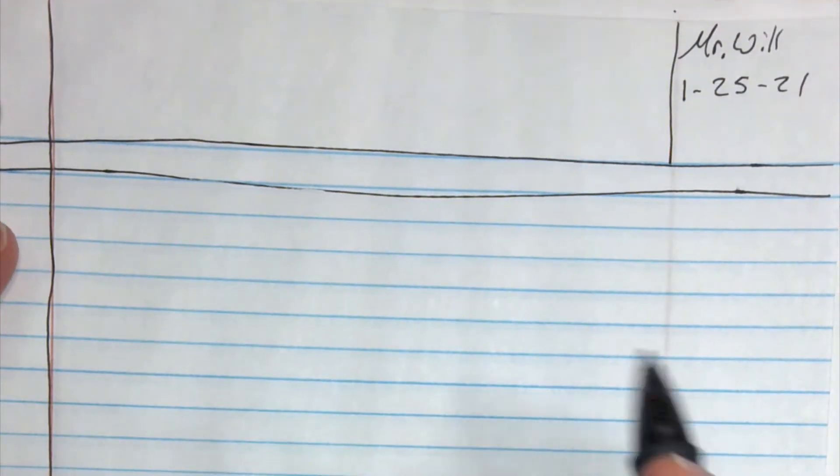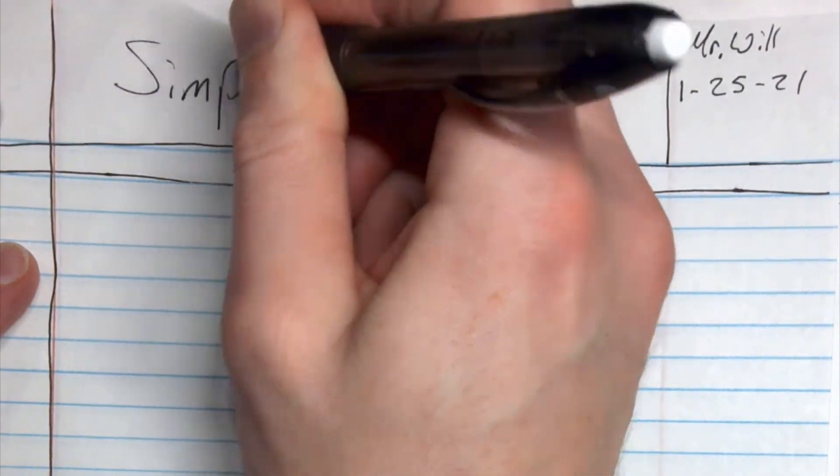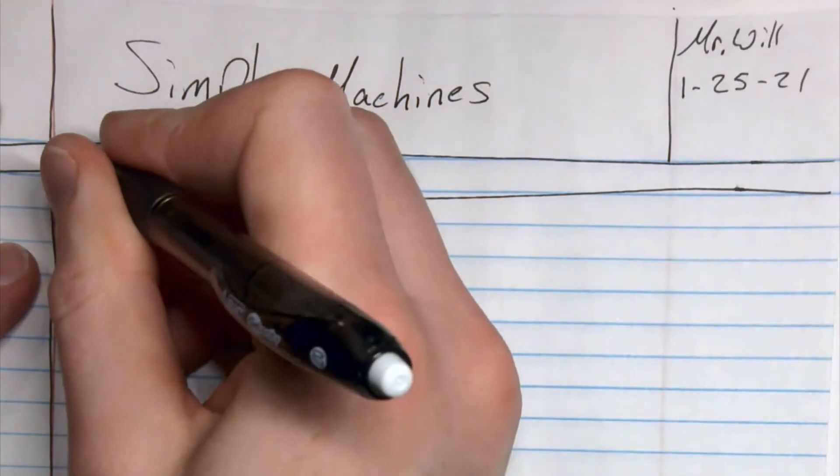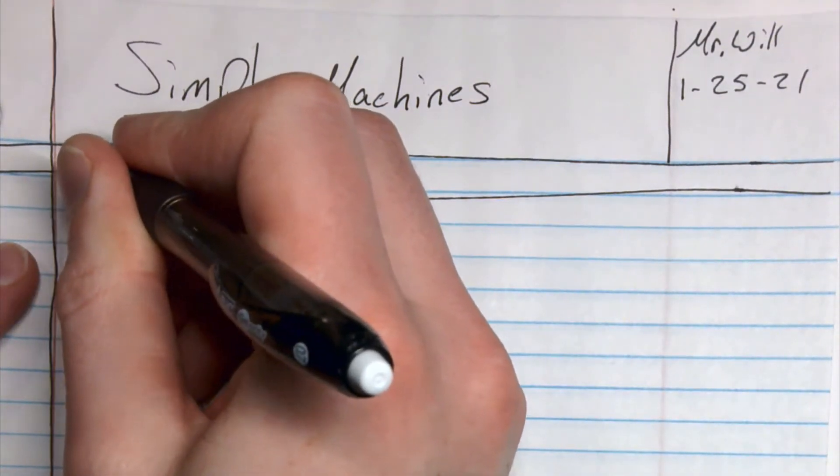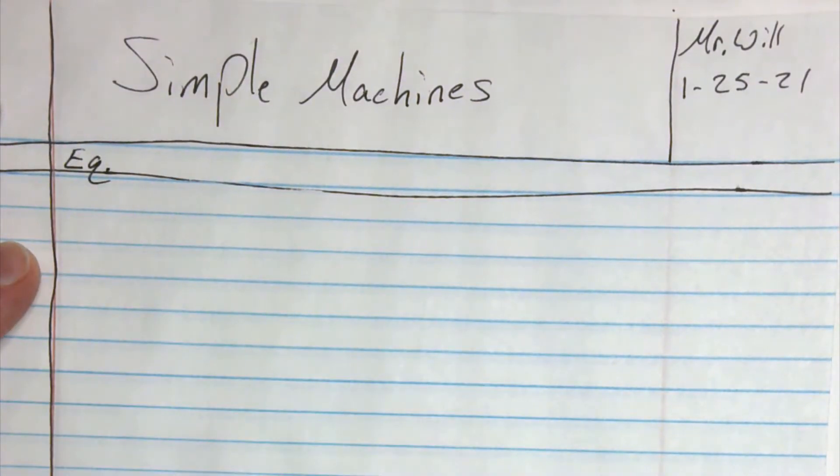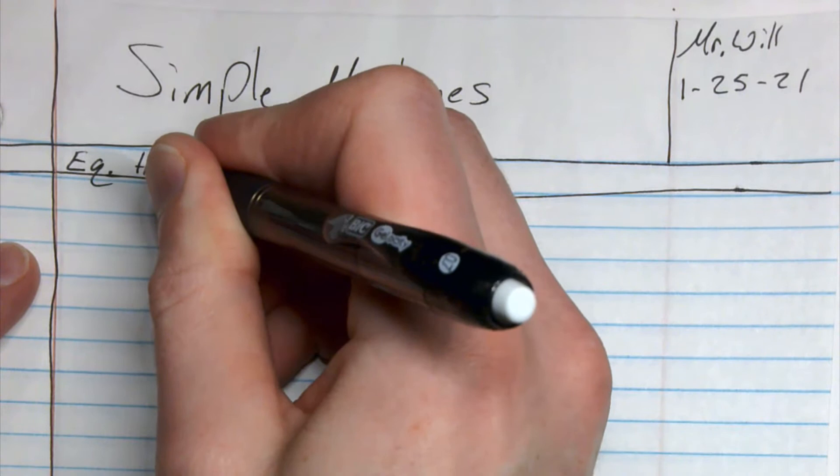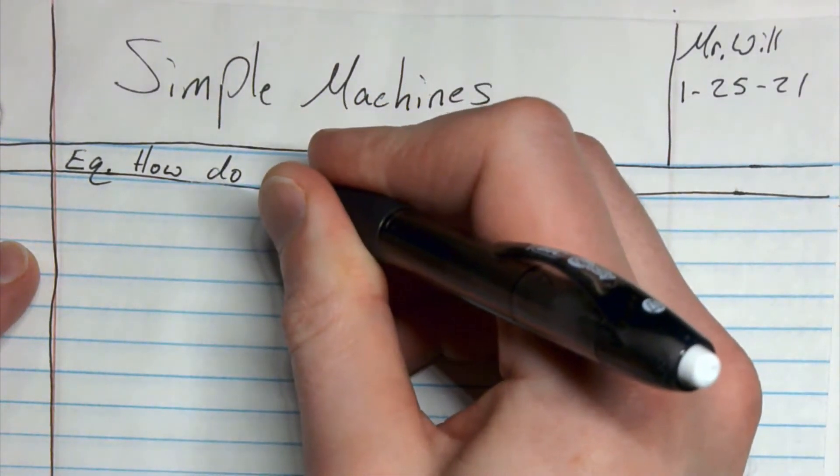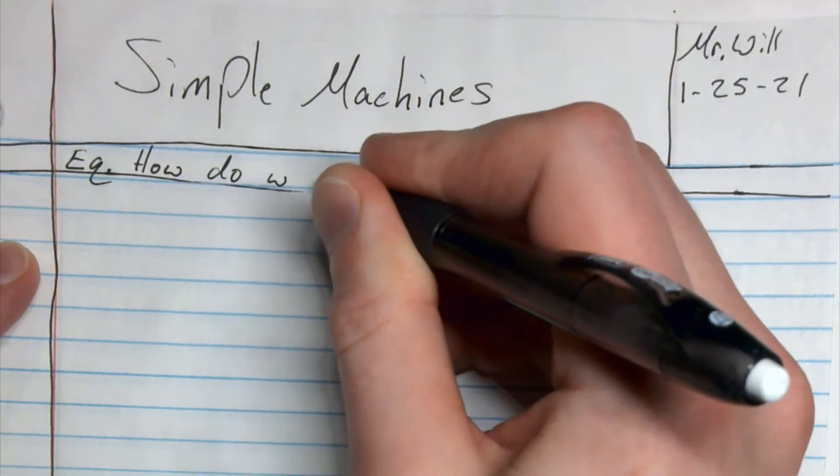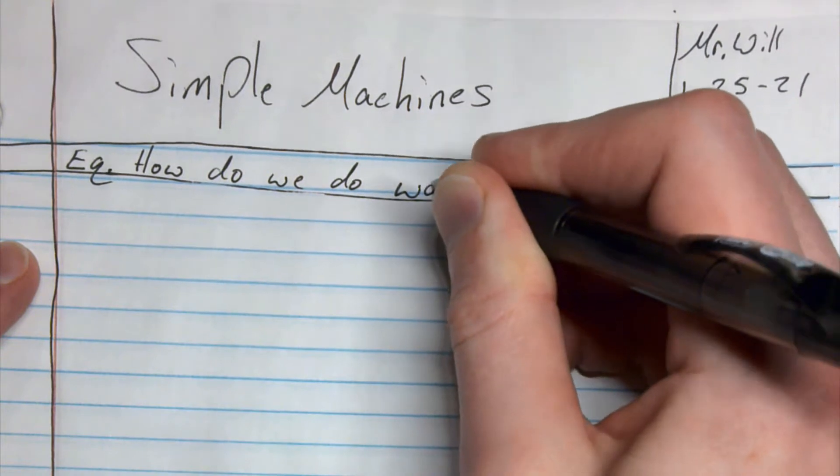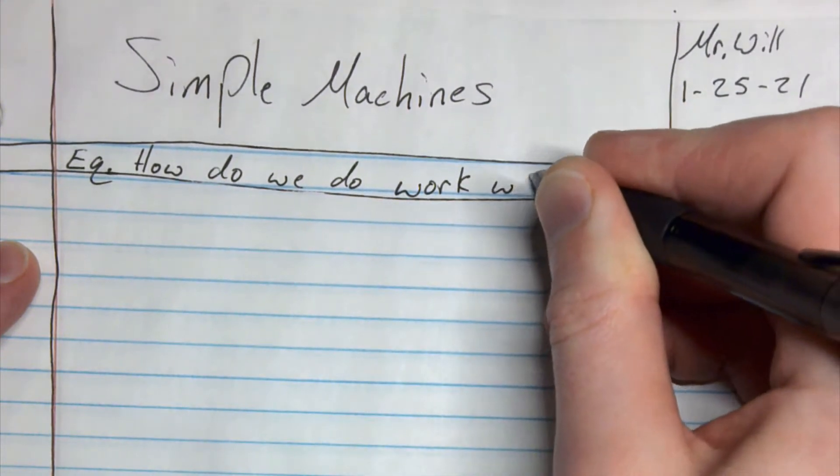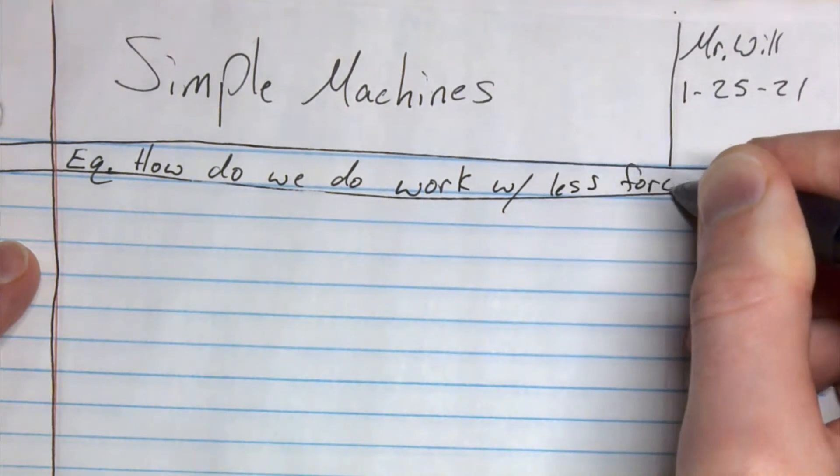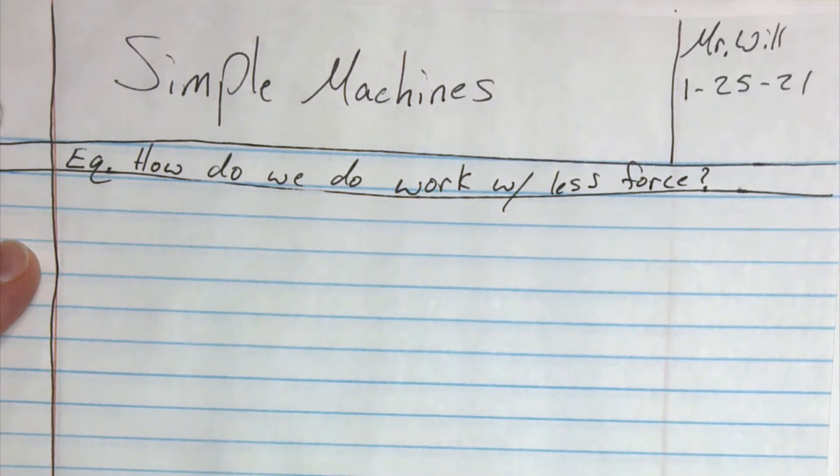On the top here we're going to write Simple Machines, and our essential question, our EQ is: How do we do work with less force? Which is basically what a simple machine is, but we'll get to that.